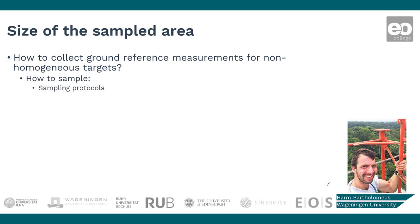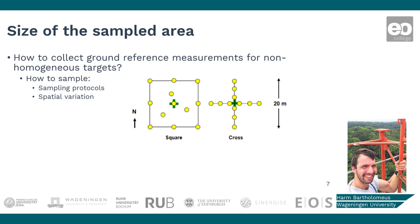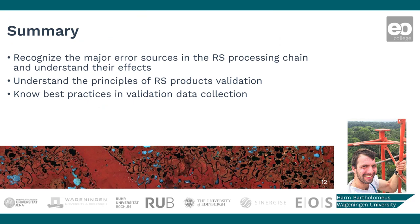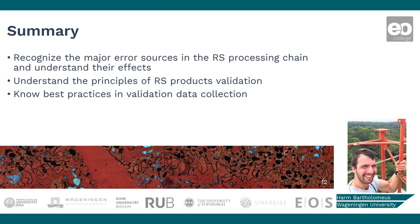For this, different sampling protocols are available which try to remove the potential bias from the ground data collection. In this knowledge clip, you learned the importance of evaluating sensor accuracy and we gave information on how this is done for remote sensing data, or how you can do it yourself if needed.